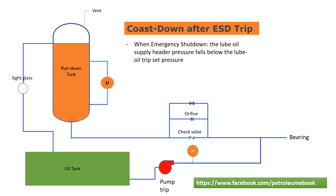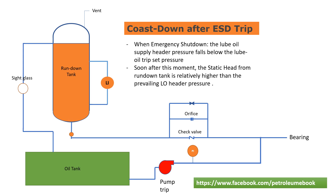When both the main and auxiliary lube oil pumps are lost, such as in the case of total power failure, the lube oil supply header pressure falls below the lube oil trip-set pressure. The main equipment trips and enters its coast-down period. Soon after this moment, the static head from the run-down tank is relatively higher than the prevailing lube oil header pressure. Therefore, a gravity flow is established from the run-down tank across the check valve down to the bearings through the lube oil supply header.